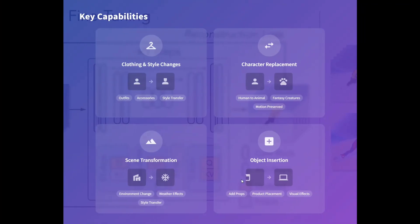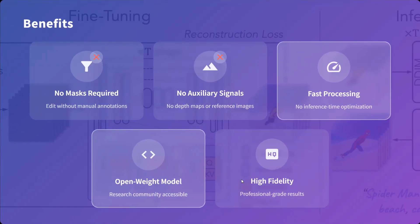Key capabilities include: changing clothing and style; character replacement such as human to animal or fantasy creature; scene transformation; and object insertion and deletion. Benefits include: no mask required — you edit without manual annotation, just giving a natural language instruction; no auxiliary signals like depth maps or reference images needed; fast processing, with output in a couple of minutes as we saw; open weight model, which is the winner for me; and high fidelity professional-grade results.